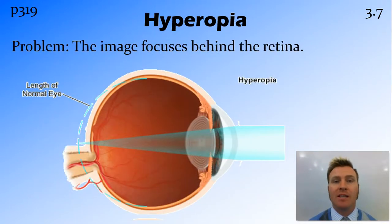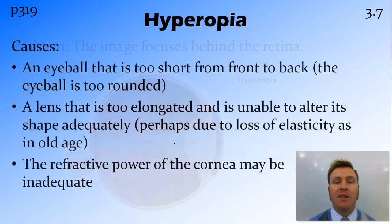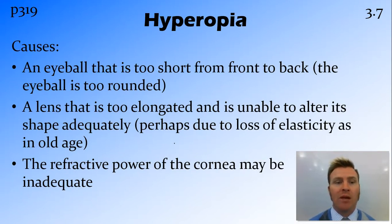The cause of this is that the image focuses behind the retina. Where the image is supposed to focus on the retina, the focal length of the lens is too long, causing the image to focus behind the retina. This can happen because the eyeball is too short — a condition you're just born with — so that focal point ends up behind where the retina is.